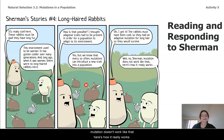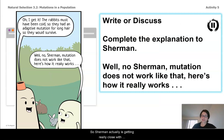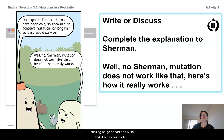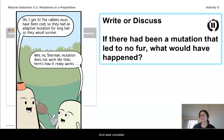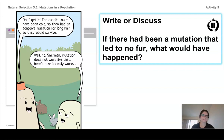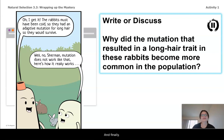Sherman is actually getting really close to a correct explanation, but there's a little something he's missing. Go ahead, write and discuss. Complete the sentence: Well, no, Sherman. Mutation does not work like that. Here's how it really works. Also consider: if there had been a mutation that led to no fur for the rabbits, what would have happened to that rabbit? And finally, why did the mutation that resulted in a long-haired trait in those rabbits become more common in the population?